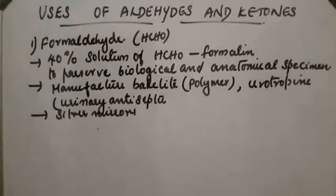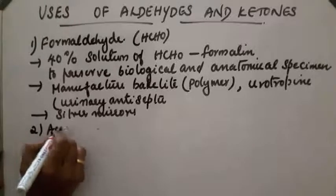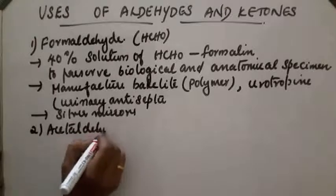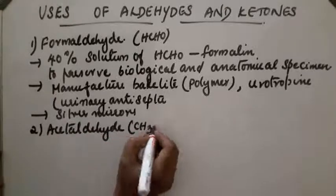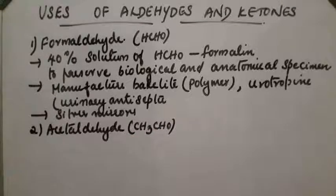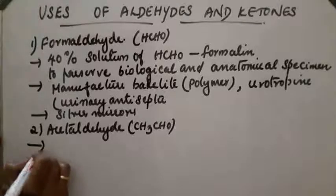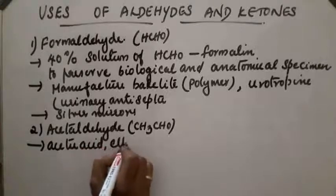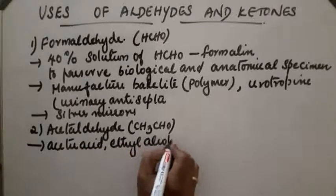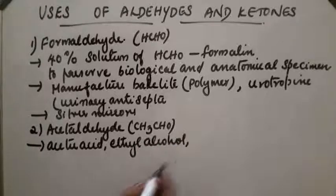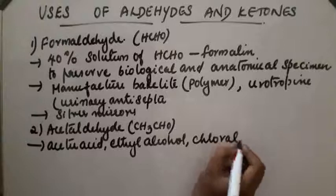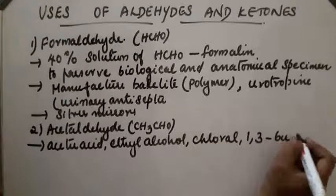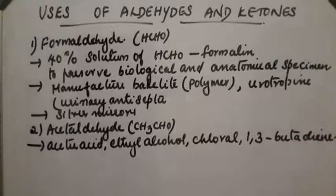The second compound is acetaldehyde (CH3CHO). It is used for the manufacture of different compounds like acetic acid, ethyl alcohol, and chloral. 1,3-butadiene is also prepared from acetaldehyde and is used in the manufacture of rubber.